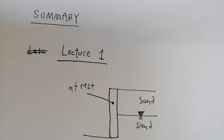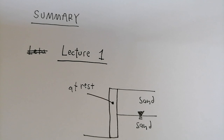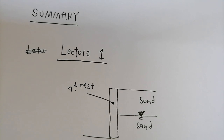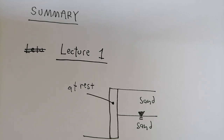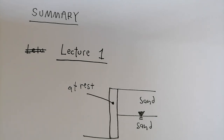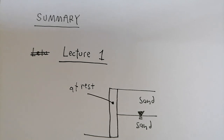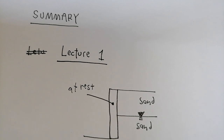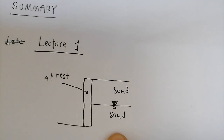Assalamualaikum and a very good day to everyone. This is B8257 Geotechnics Lecture 5, which is for Week 12. In this session, I have decided to show you one more problem which is related to lateral earth pressure. But before that, I would like to summarize what we have learned so far. Let's go straight to the point — it's just a quick summary.